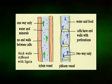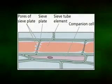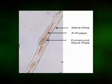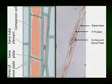In sieve tube members, sieve areas occur on end walls called sieve plates. A sieve plate containing a single sieve area is called a simple sieve plate, whereas one with several sieve areas is a compound sieve plate. Simple sieve plates usually occur on transverse end walls and compound sieve plates on oblique end walls. The sieve cells of gymnosperms and lower vascular plants do not have end walls; sieve areas occur over the entire lateral walls but often occur in greater frequency in the walls of the overlapping ends of the cells.